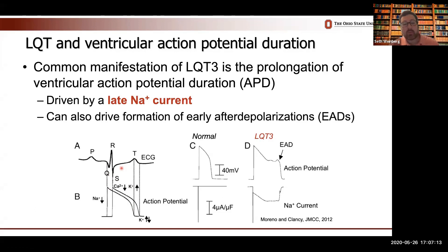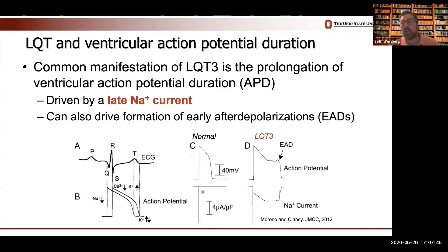Long QT type 3 is driven by a gain of function in the sodium channel mutation, which leads to what's known as a late sodium current. Under normal conditions, the sodium channel has a fairly typical function of very rapidly activating and inactivating, corresponding with triggering the cardiac action potential, with very little sodium current during the plateau phase. But in our mutation phenotype, we have this very prolonged and pronounced late sodium current that persists throughout the action potential. This current is the trigger for prolonging the action potential and often drives these irregular depolarizations known as early after-depolarizations, or EADs, which themselves can be triggers for arrhythmia.